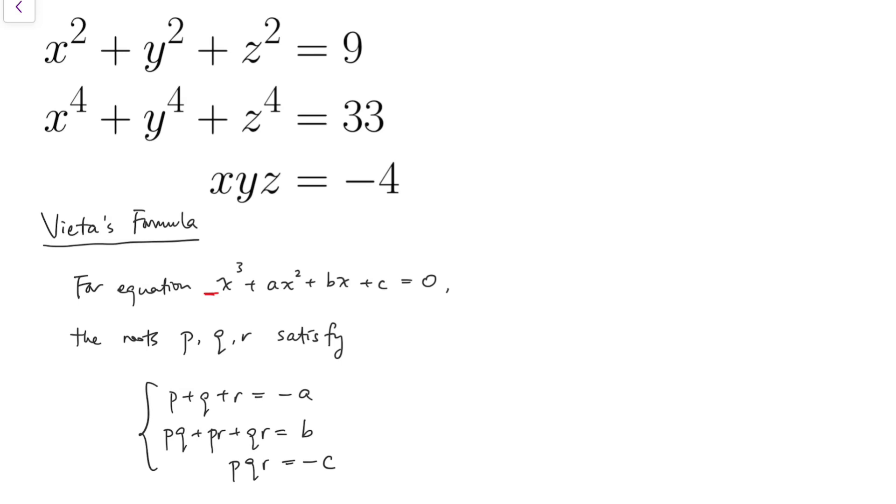Going back to our system, we can consider a cubic equation with roots x squared, y squared, and z squared. Now we have the sum, and we can find the sum of the mutual products by looking at the first equation squared and the second equation together.